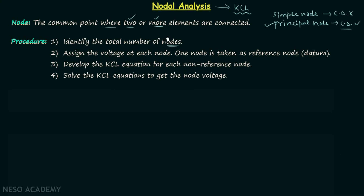If you remember mesh analysis, in step number one we identified the total number of meshes; here we identify the total number of nodes. In step number two, we assign the voltage at each node. Out of all the nodes, we take one node as the reference node, known as the datum, and the potential of the reference node is taken as 0 volts.